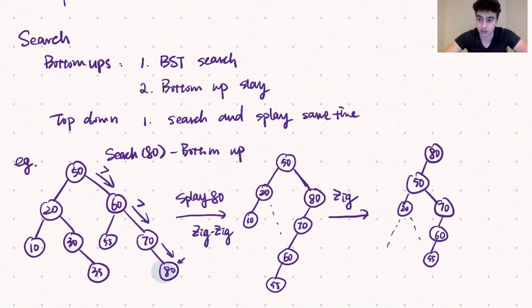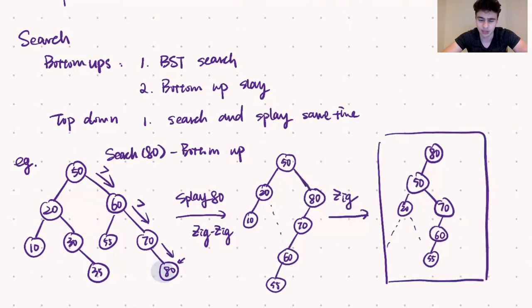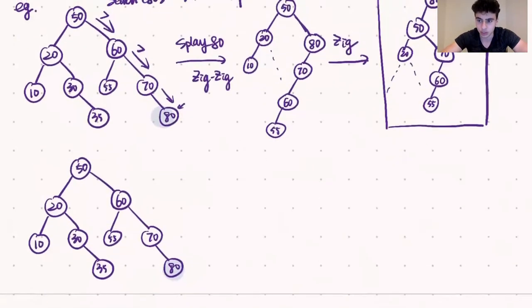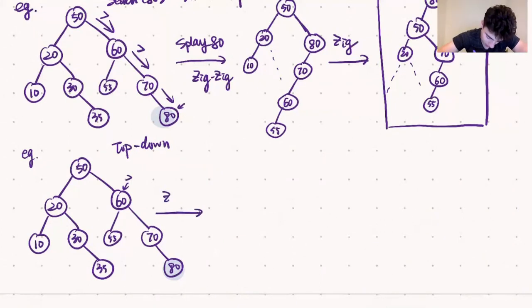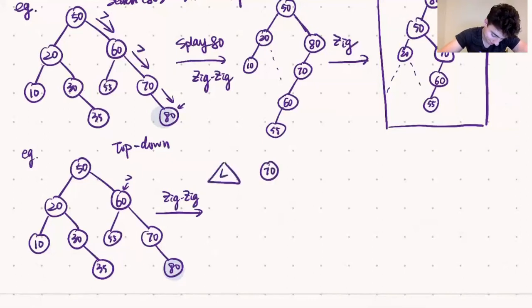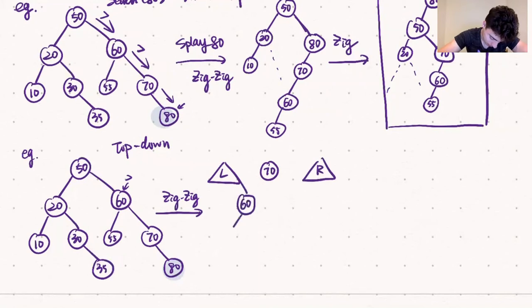That is the result of our search using bottom-up splay. Now let's take a look at search using top-down splay. As mentioned, we're going to splay and search simultaneously, immediately starting from the root. We first evaluate whether we need to make a zig-zig or a zig-zag. We look to the right of 50 and notice we are still larger than 60, so we look right again and realize we need a zig-zig. We bring 70 to the root of the tree and attach the subtree rooted at 60 to the left header, with 60's right child being 50, and 50's right child being 55.